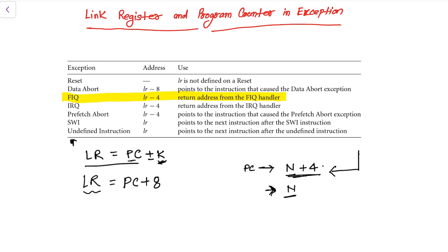When the user has to come back to the original address, the user does LR minus 4. The plus 8 means it adds 8 from the address where the processor is executing. Since the PC is already N plus 4, it becomes N plus 8 in LR. So to get back to the correct address N, the link register minus 4 gives us the return address.